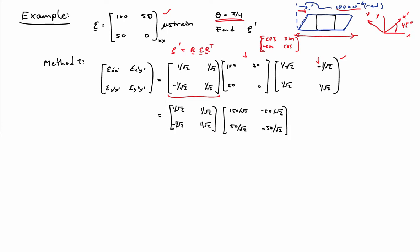Now I multiply out these three matrices. Multiplying the second two gives an intermediate result, and then multiplying the first matrix with that gives the final result. I end up with 100 microstrain in the X prime direction — same as before — and minus 50 microstrain for the X prime, Y prime shear component. That's simply the straight mathematical way of doing the calculation.